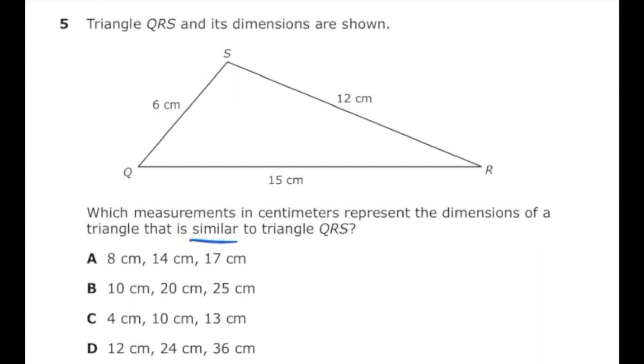The first thing I noticed is if I look at side QS which is 6 and side SR which is 12, 12 is twice the amount of 6. So my first two sides should have that same relationship. Letter A has 8 and 14—14 is not twice 8, so that's not letter A. Letter B has 10 and 20—that works because 10 times 2 is 20. Letter C has 4 and 10—that doesn't work because 4 times 2 is 8. Letter D has 12 and 24—that works because 12 times 2 is 24.